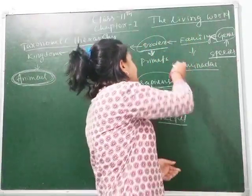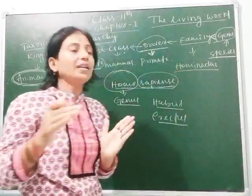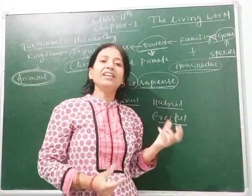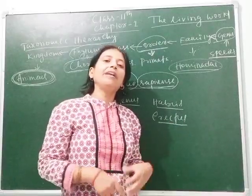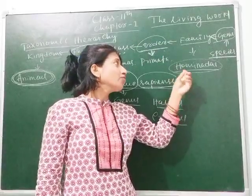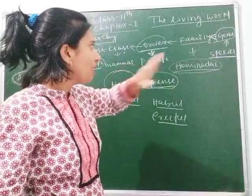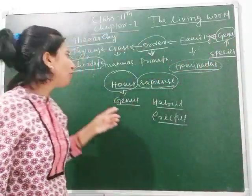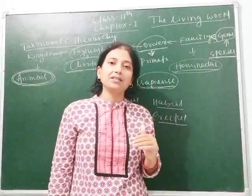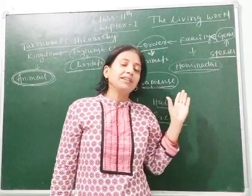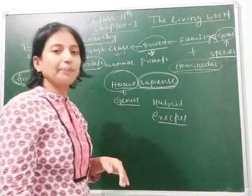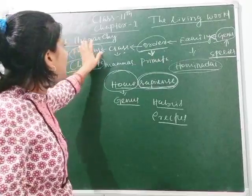When we move to family, out of Primata we are differentiated and come under human beings only. All human beings, whether living in African jungles, Australia, or any area, have common characters and are placed under family Hominidae. In genus Homo, only humans are placed. And in species, modern man is Homo sapiens. That is your taxonomic hierarchy.